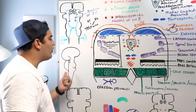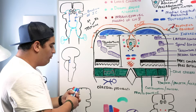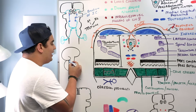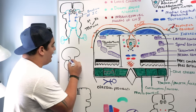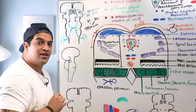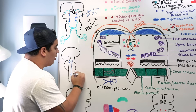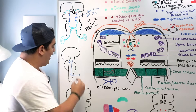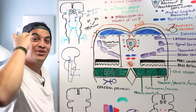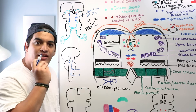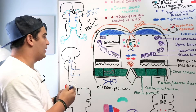The inferior colliculus not only connects to the medial geniculate nucleus via the brachium, but can also send information to the superior colliculus. If you hear something, the inferior colliculus tells the superior colliculus, which then activates the tectospinal pathway to move the muscles of the head, neck, and eyes toward that auditory stimulus.